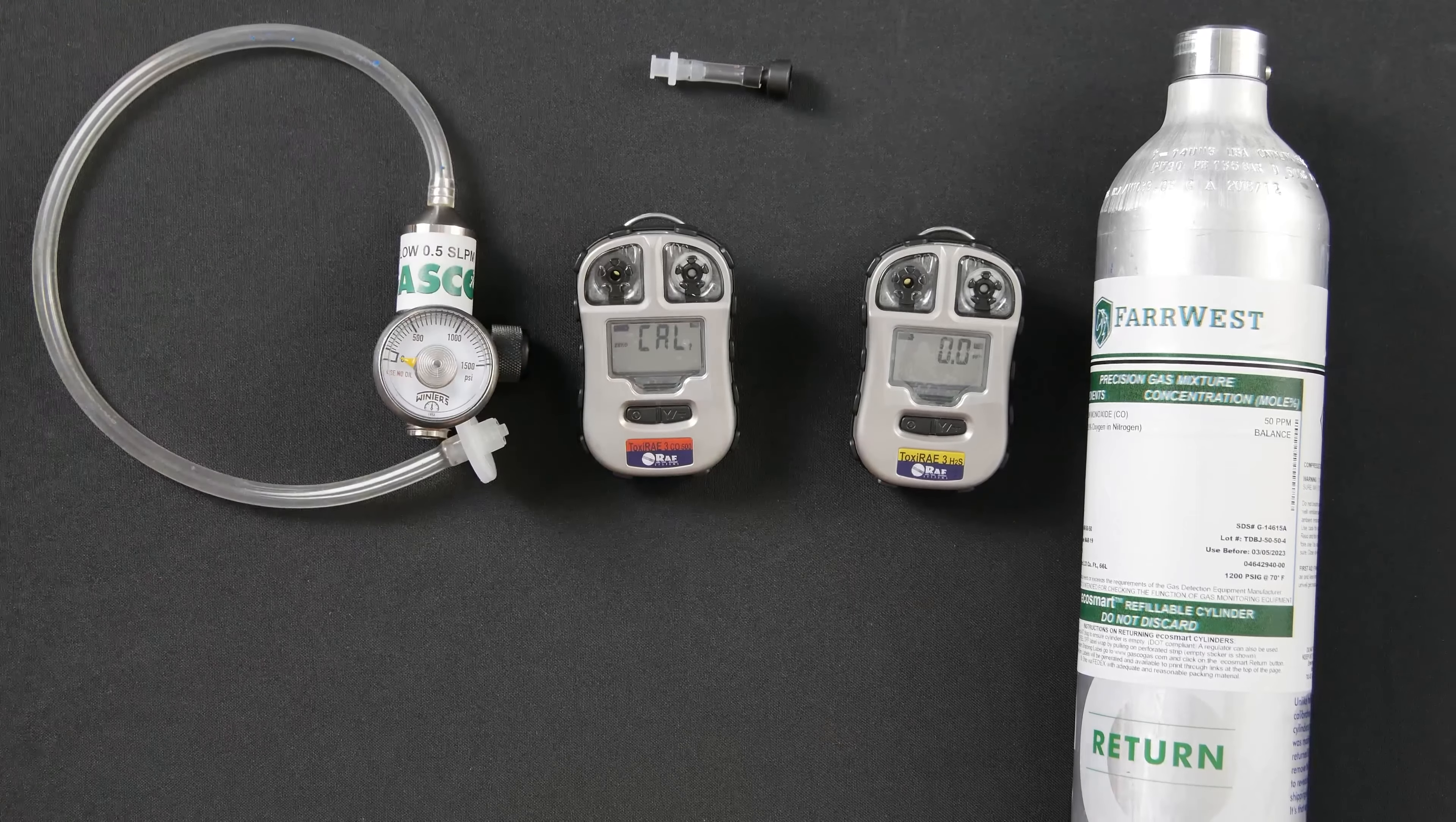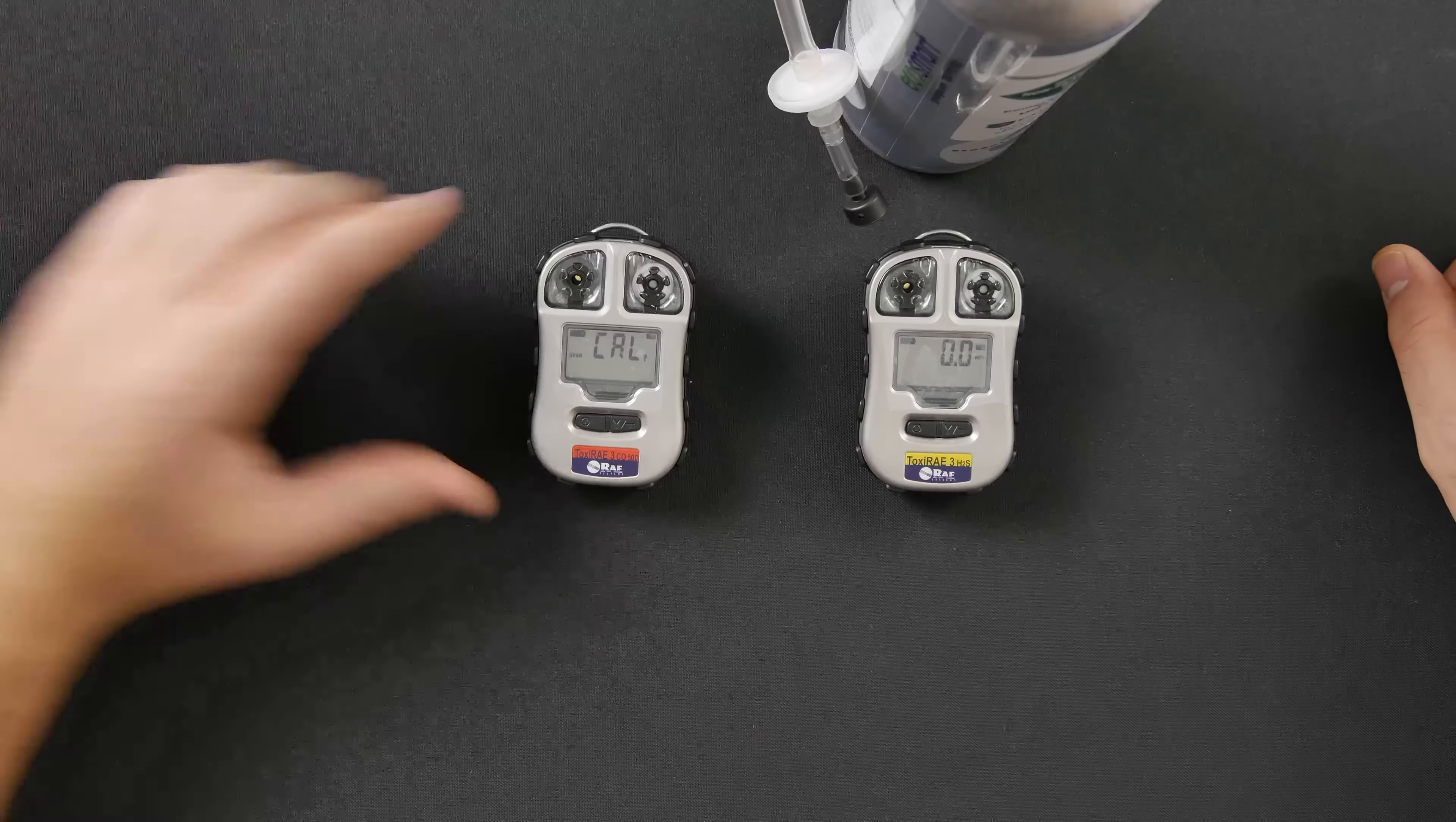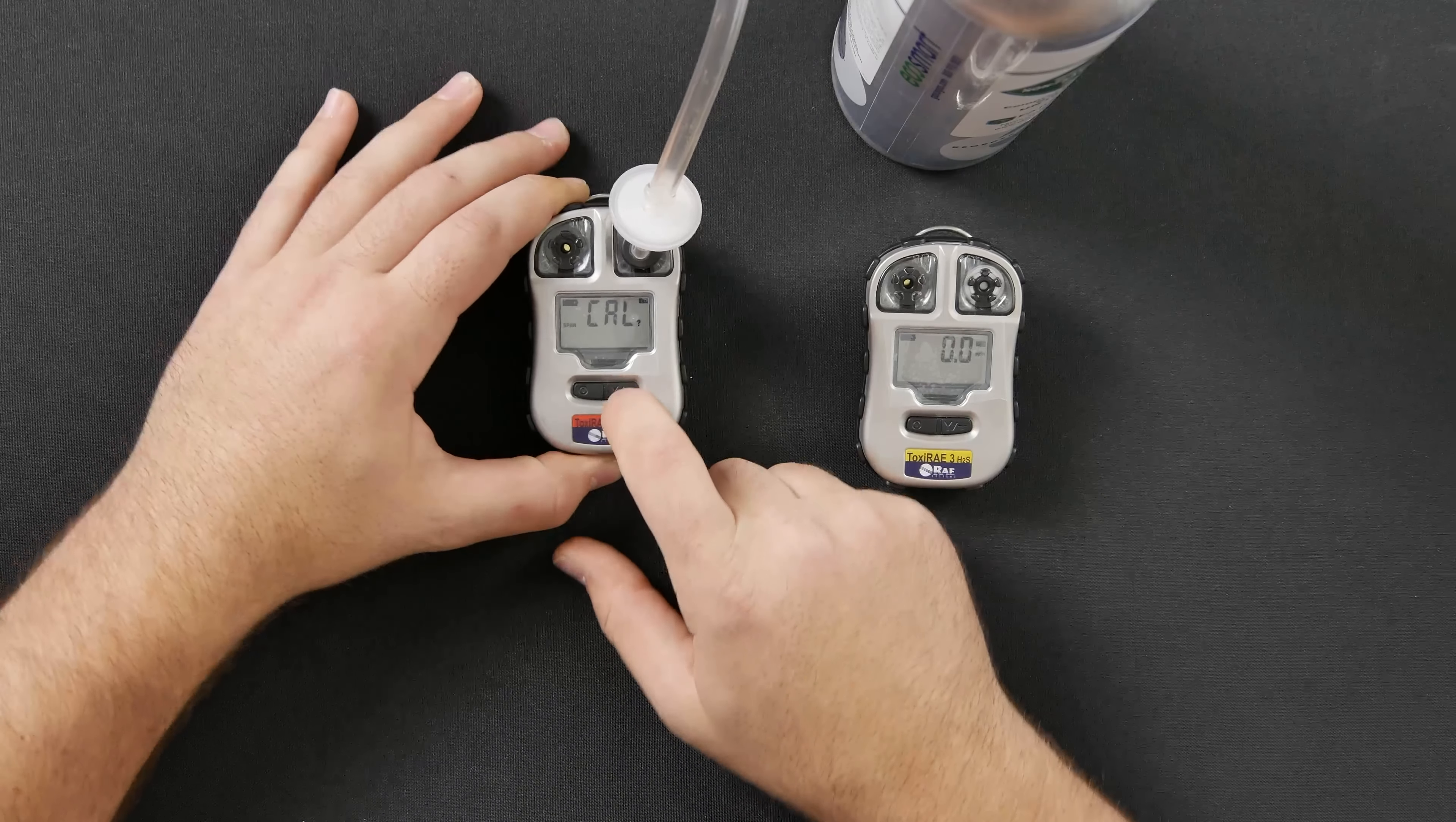It will then come to the zero calibration. Skip it by hitting the mode button. It will then come to the SPAN. To start the SPAN calibration, you will want to attach the adapter to the sensor cover. It snaps right on. You will then select yes to start the SPAN calibration.